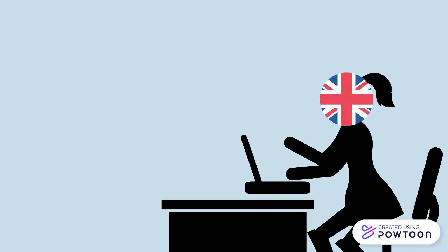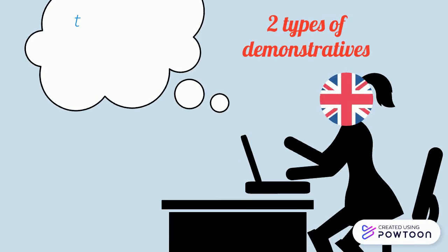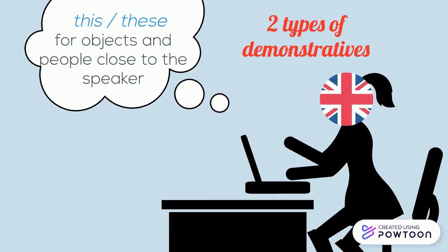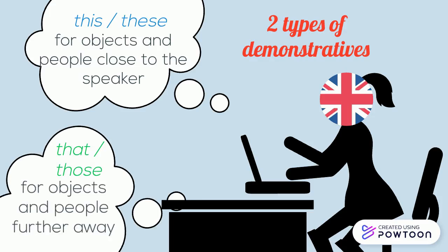In English, there are two types of demonstratives: 'this' and 'these' for objects and people that are close to the speaker, and 'that' and 'those' for objects and people that are further away.